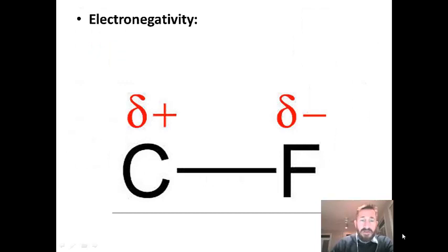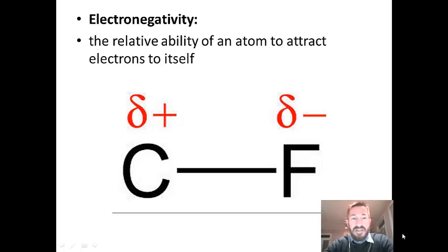First, let's give a good definition for the idea of electronegativity. Electronegativity is the relative ability of an atom to attract electrons to itself. This applies to atoms that are in molecules, so their atoms are in bonds. In the example here, we have two atoms that are bonded, carbon and fluorine.